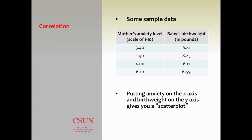The hypothesis here would be something like: as the mother's anxiety increases, the baby's birth weight decreases, and vice versa. If we do not imply any sort of cause — just saying as one goes up the other goes down — then maybe we're looking at a correlation hypothesis.